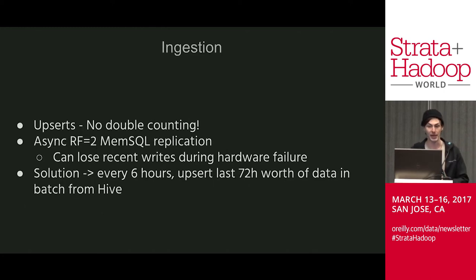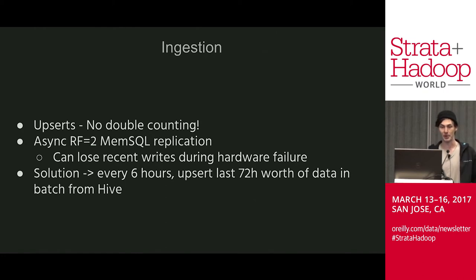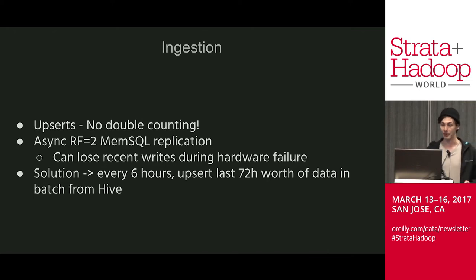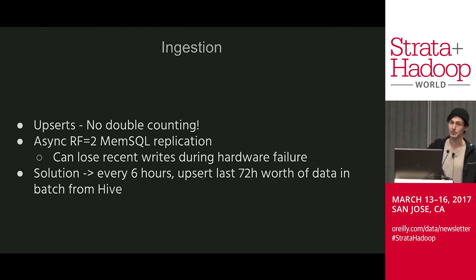All writes we perform are upserts, making heavy use of SQL's ON DUPLICATE KEY syntax. We store data in MemSQL configured with asynchronous replication with a replication factor of two. Because we rely on async replication, we can lose unreplicated writes on hardware failure. Our fix is to upsert the past 72 hours of data in bulk every six hours — a cheap hack, but it ensures we get all data in. In practice, in single-node failure scenarios in larger clusters, the fraction of rows lost is small enough that aggregate data served between failure and backfill is within an acceptably small margin of error.